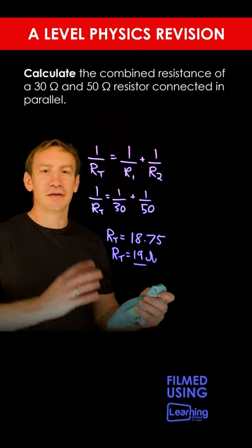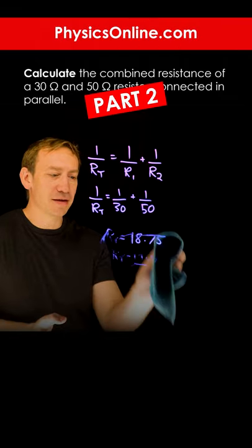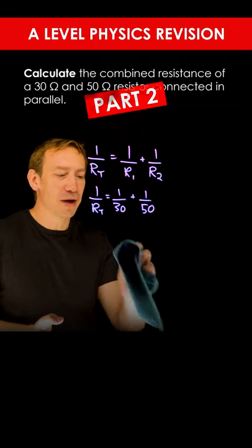So if we want to calculate the combined resistance of a 30 ohm and 50 ohm resistor we can use this method, but there is an easier way.